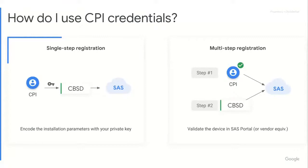The other way to do it is multi-step. Step number one: the CPI puts the information about that CBSD into the SaaS directly. For Google SaaS, we offer an API or a SaaS portal user interface. Step two: the CBSD registers — it contacts the SaaS with just its serial number. The SaaS already has the information about that CBSD, so the CBSD can go ahead and operate because it's been pre-signed by you, the CPI.